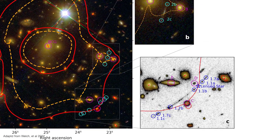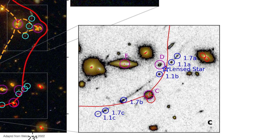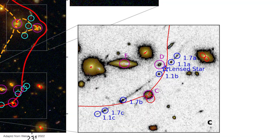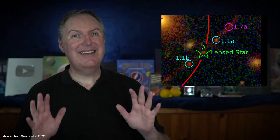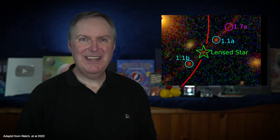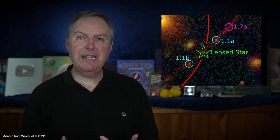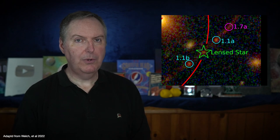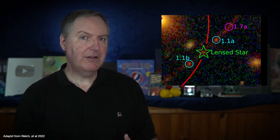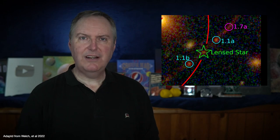Earendel appears directly on or extremely close to one of the critical lines. The team calculated that this rare alignment is magnifying Earendel's light anywhere from 1,000 to 40,000 times. That's an insane amount of magnification. Earendel's location on the critical line explains why there's only one image of the star instead of two or more. The images of the background star are so close together, they appear as a single point in the Hubble image.